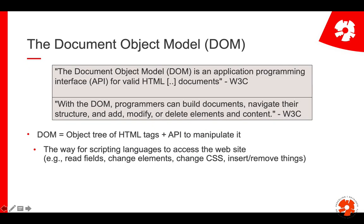The document object model is an application programming interface for valid HTML documents, so it's an API that you can use. Looking at the second definition by the W3C, with the DOM, programmers can build documents, navigate their structure, add, modify, and delete elements and content. Basically it's an API that allows you to access the HTML source at runtime while it's displayed to you, and make changes to it.